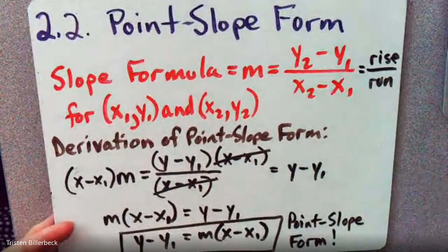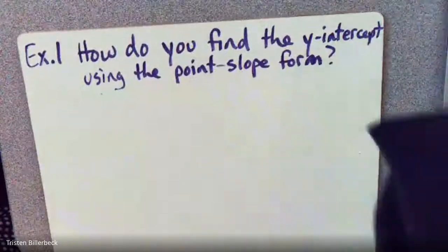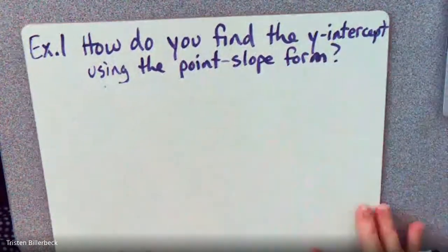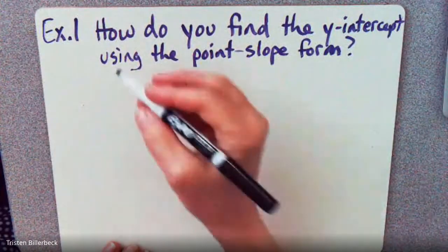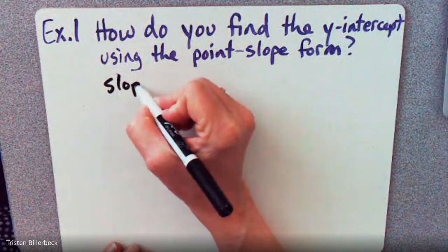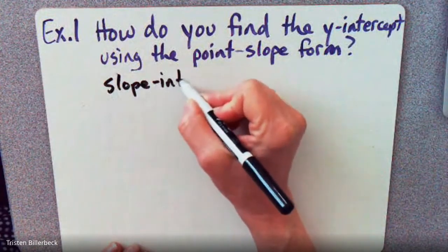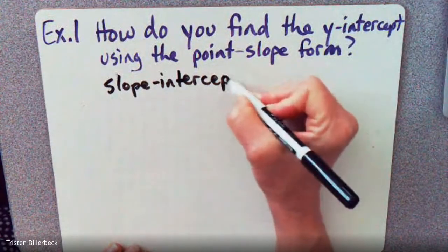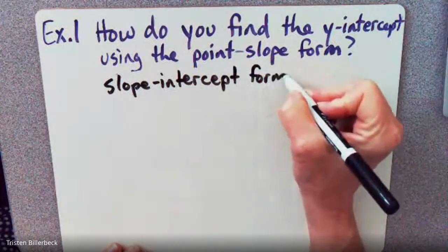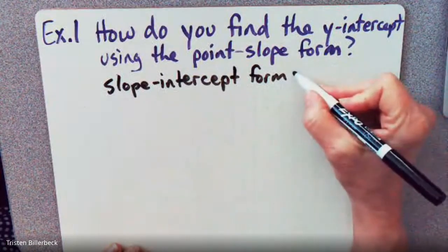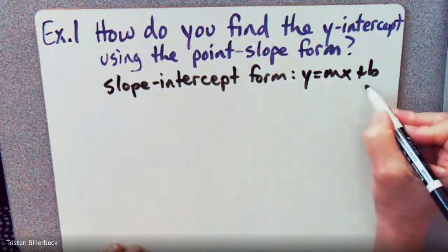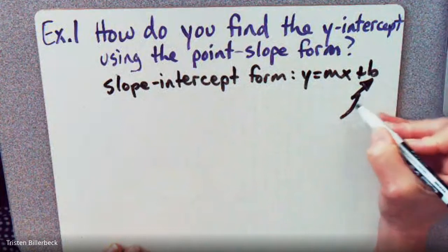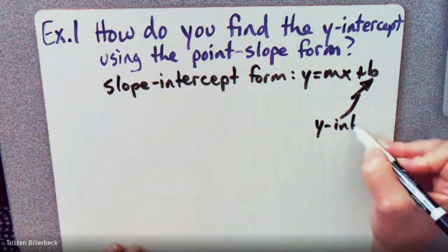Now we can find the Slope-Intercept Form from the Point-Slope Form. So first let's start with the Slope-Intercept Form so we know what we're trying to accomplish here. The Slope-Intercept Form is Y equals MX plus B, and B is your Y-intercept. So that's what we're looking for.